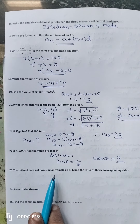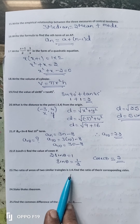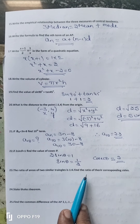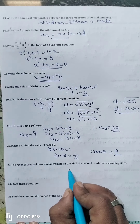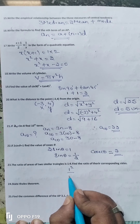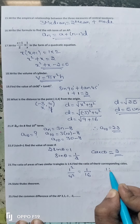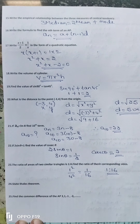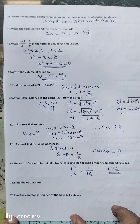The 23rd question: The ratio of areas of two similar triangles is 1 is to 4. Find the ratio of their corresponding sides. The ratio of their corresponding sides is 1 is to 16.